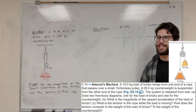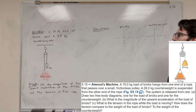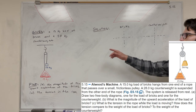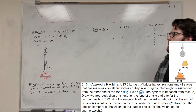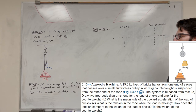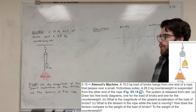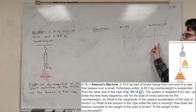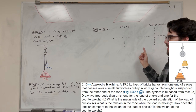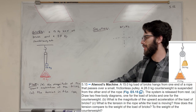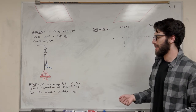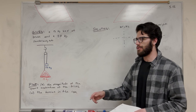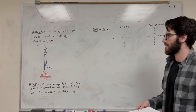Welcome back to some physics. We have a counterweight problem: a 15 kilogram load of bricks and a 28 kilogram counterweight. Our goals are: A, draw free body diagrams for both the bricks and the counterbalance; B, find the magnitude of the acceleration of the system; and C, find the tension in the rope. Let's get started.